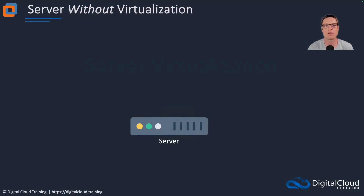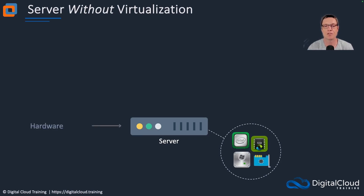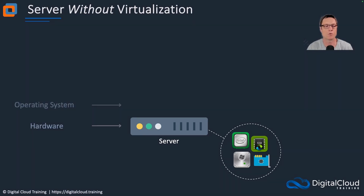Let's have a look at an example of a server when we're not using virtualization. A long time ago we didn't have virtualization, so this is what we built. We had a server which obviously has some hardware in it, and that hardware is composed of the CPU, the processor, the RAM, the random access memory, some storage, and a network adapter. There are other components as well but these are the main important ones.